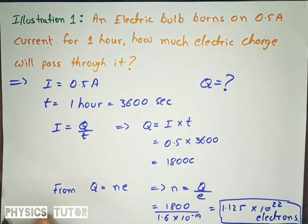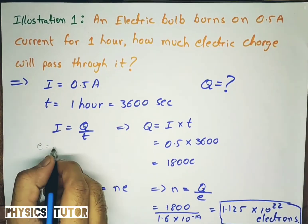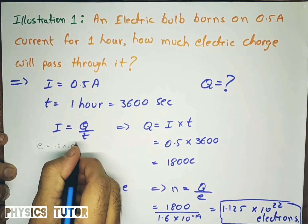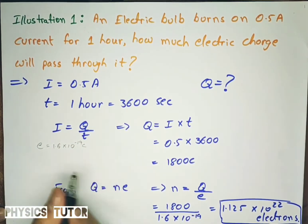I am making n the subject, and 1800 divided by 1.6 into 10 raise to minus 19. This is the value of e. We can consider data given or if it is not given then we will have to assume the value of electron e is equal to 1.6 into 10 raise to minus 19 coulomb. This is the charge of electron by default we have to take.